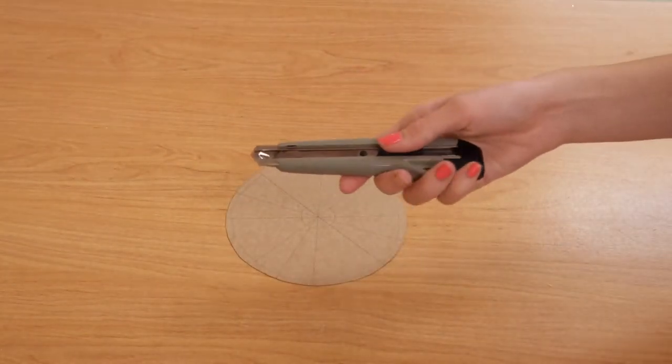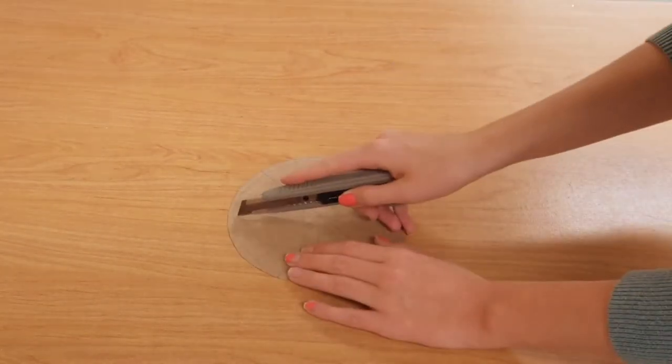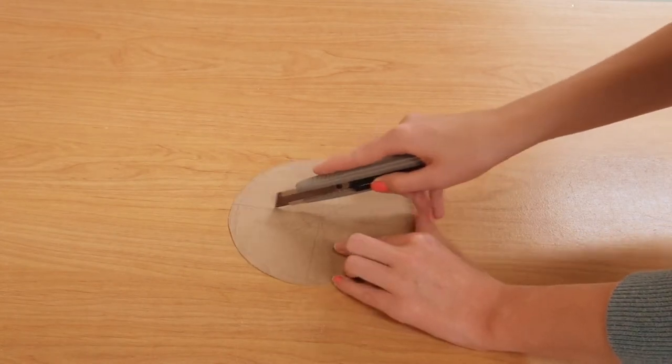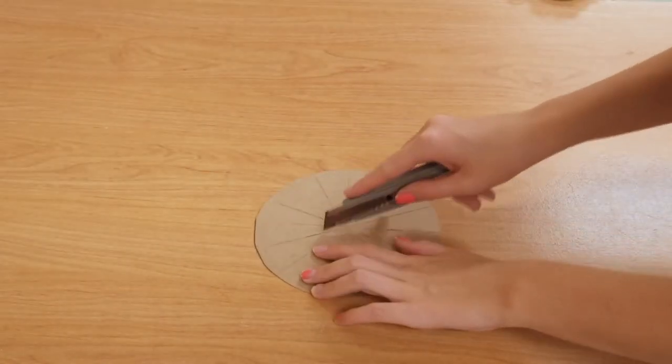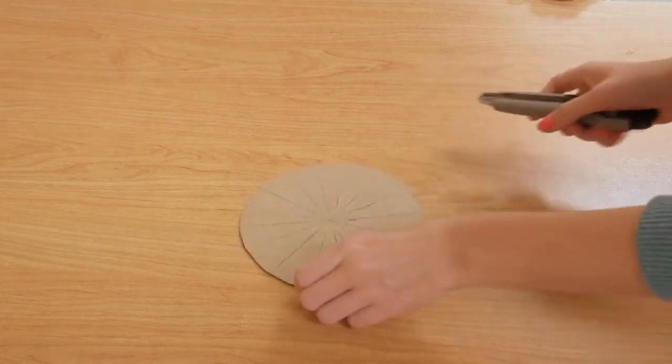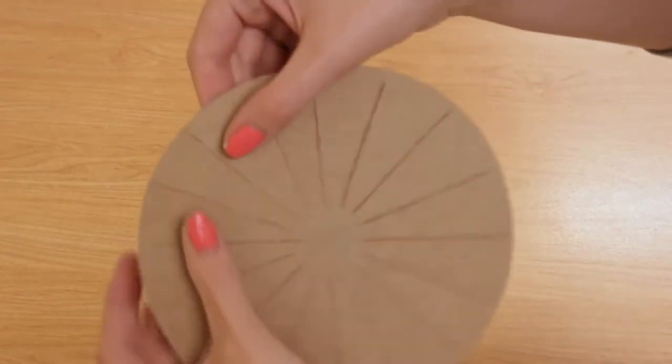Get a parent or older sibling to help you use the exacto knife and cut slits along the ruler lines you have just made. When cutting your slits, make sure not to pass the lines created by the drawn edge or the inner circle.